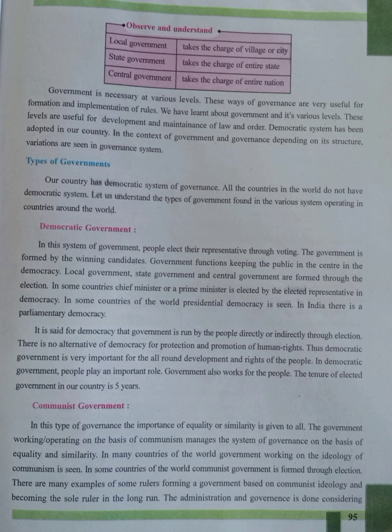The main function of a democratic government is to form, implement, and reform laws as well as give justice. The state government administers the whole state, the local government administers the whole village or particular city, and the central government governs the entire nation. All the countries in the world do not have a democratic system. Let us understand the types of government found in various systems operating in countries around the world.